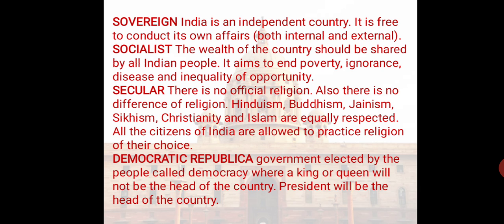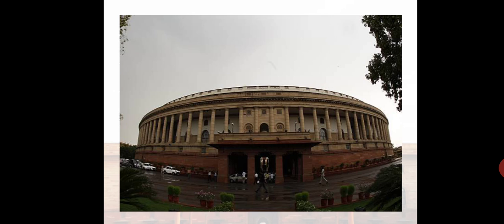Now coming to the point democratic republic. The meaning of democratic republic is government elected by the people, called democracy. The meaning of democracy is government elected by the people of India, where a king or queen will not be the head of the country. The President will be the head of the country in India. This is one more beautiful view of our Indian Parliament House.